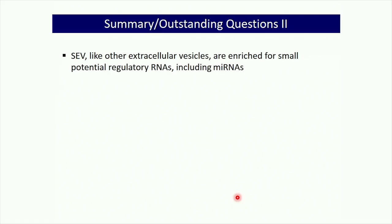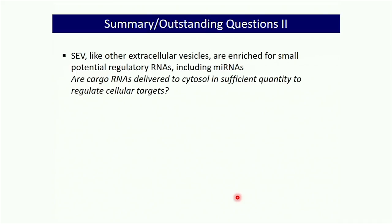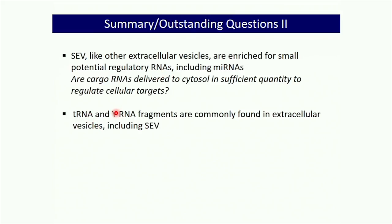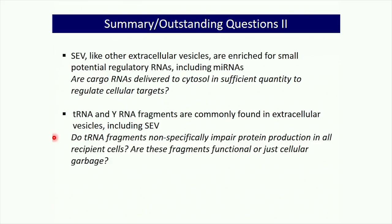In one experiment using THP monocytic cells transfected with a Renilla luciferase expression plasmid and then treated with SEV, all cells received similar amounts of plasmid, but cells treated with high-dose SEV were strongly impaired in producing Renilla luciferase—implying protein production is impaired in cells that take up many EVs. To summarize: SEV are highly enriched for small potentially regulatory RNAs including microRNAs targeting immune-related mRNAs, and tRNA and yRNA fragments appear to be specifically loaded. Whether these RNAs are functionally delivered in sufficient quantity to regulate cellular targets remains to be fully proven.